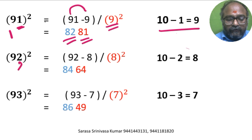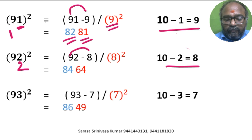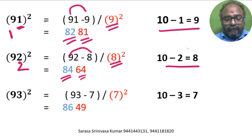Units digit is 2. So 10 minus 2 is 8. 92 minus 8 is 84. 8 square is 64. So 84, 64 is the answer.